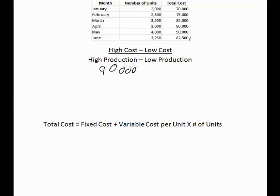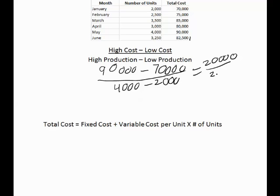So we'll put $90,000 minus the low, which is 2,000 units or $70,000. So $90,000 minus $70,000 divided by 4,000 minus 2,000 equals $20,000 divided by 2,000, or $10 per unit. Our variable cost per unit is $10 per unit.